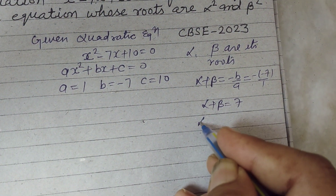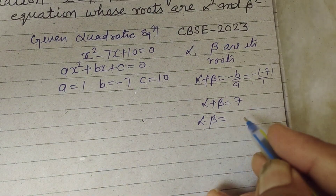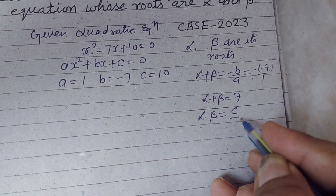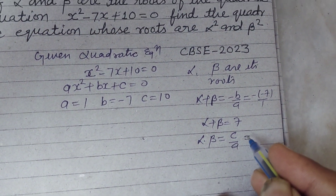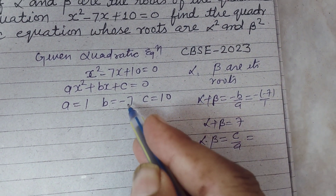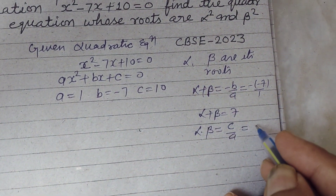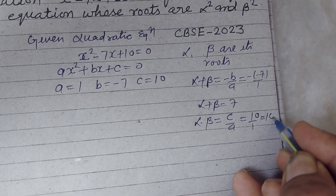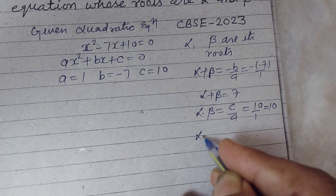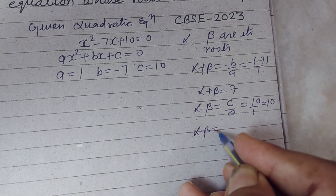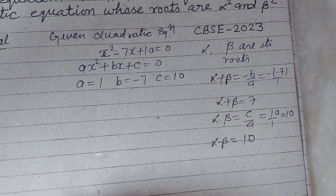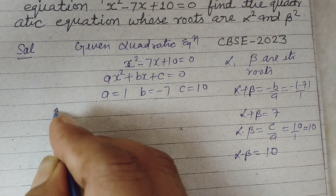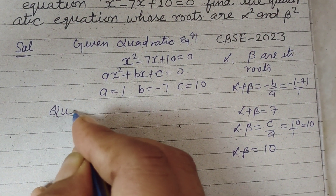And the product of roots alpha into beta equals c upon a. Since c is 10 and a is 1, therefore alpha into beta equals 10. Now we move to finding the new quadratic equation.